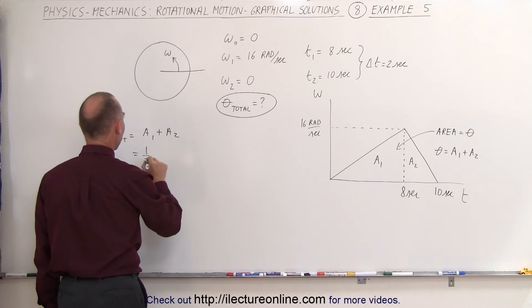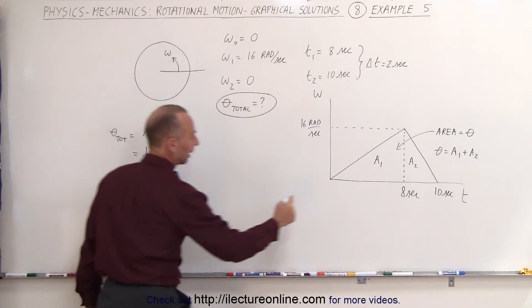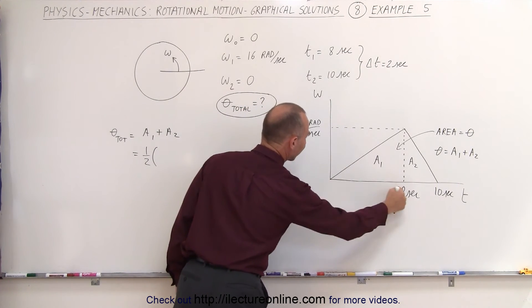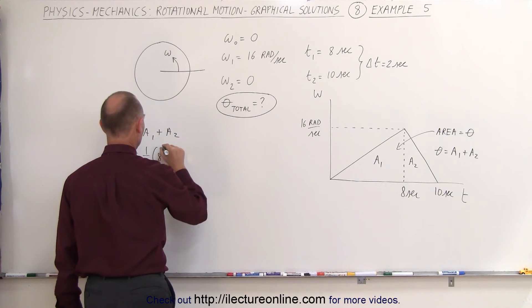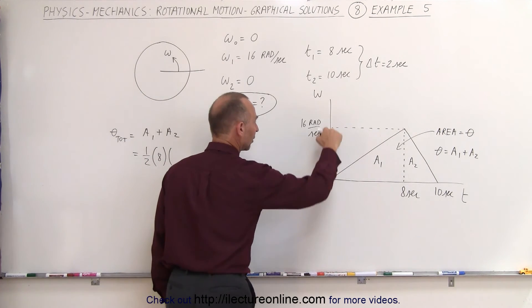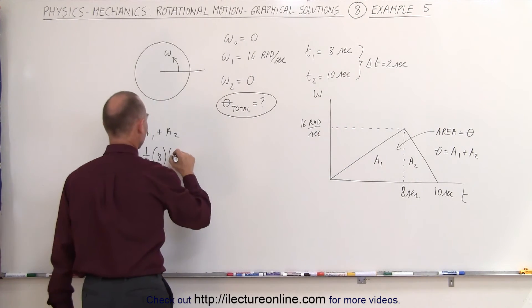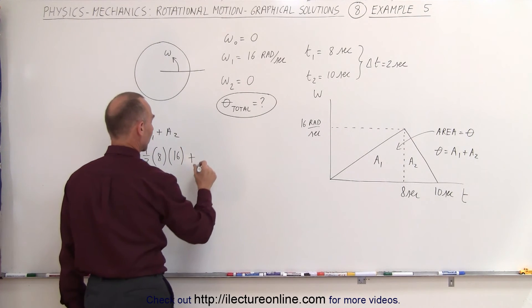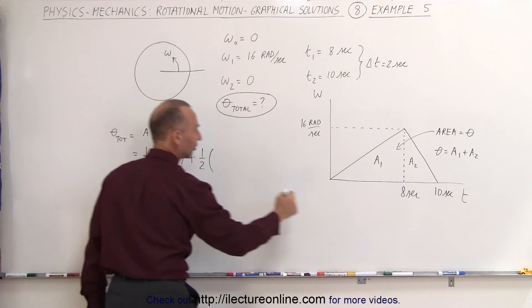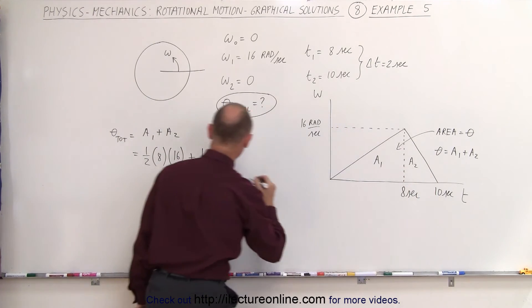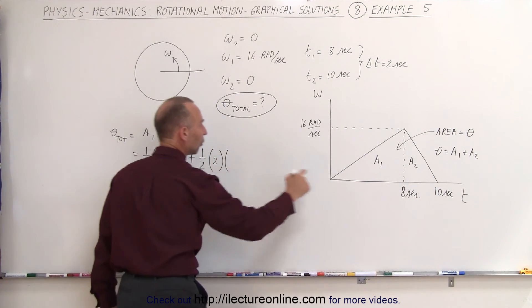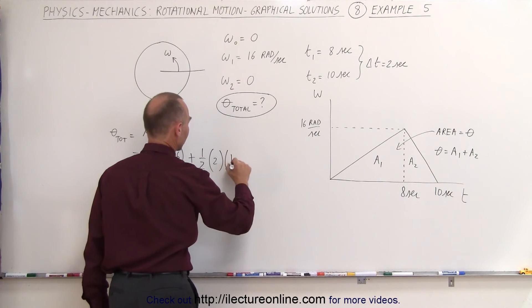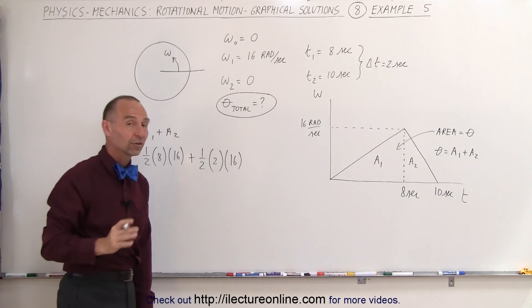So it's one-half times the base of the first one, which is 8 seconds, times the height, which is 16 radians per second, plus the area of the second triangle, which is one-half the base—in this case 2 seconds—times the height, which is also 16 radians per second. That gives us the total angular distance traveled.